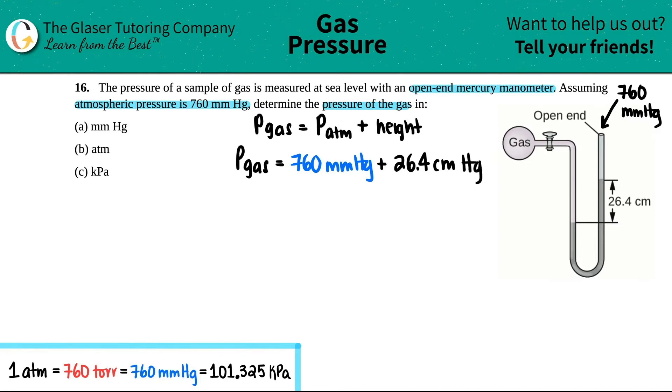But now, remember, if we want to add things together, they have to be in the same unit. But in this case, the atmospheric pressure is in millimeters. And the other height, that's in centimeters. So I got to change one of them. Now, since one of the answers is in millimeters of mercury, it would make more sense to keep this one and change this one.